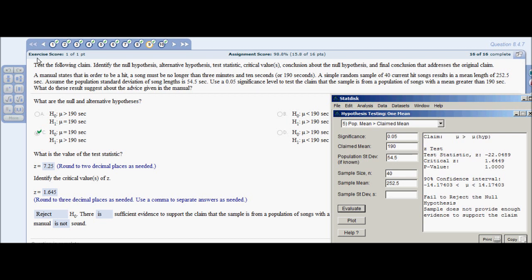Problem 9: Emanuel states that in order to be a hit, a song must be no longer than 3 minutes and 10 seconds. A simple random sample of 40 current hit songs results in a mean length of 252.5 seconds. Assume the population standard deviation of song lengths is 54.5 seconds. Use a 0.05 significance level and test the claim that the sample is from a population of songs with a mean greater than 190 seconds.